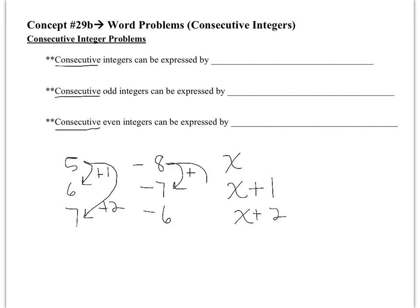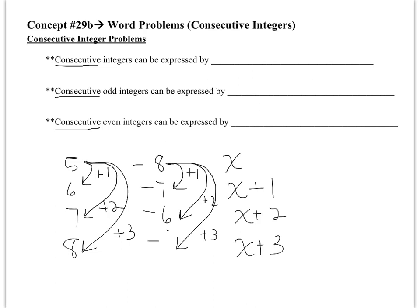If you started with negative 8 and you add 2, you would get negative 6. And if I wanted to go to the next one, that would be x plus 3. So if I started with 5 and I add 3, it gives me the next consecutive integer. So consecutive integers can always be expressed by the labels x as the first, x plus 1 as the second, x plus 2 as the third. If you're asked to find a fourth and fifth, you just keep adding 1 every single time.